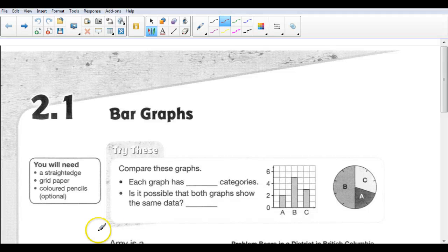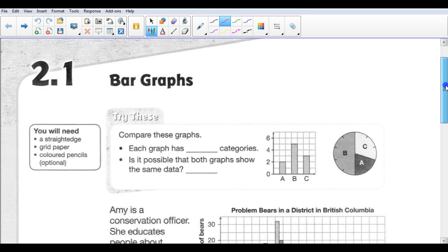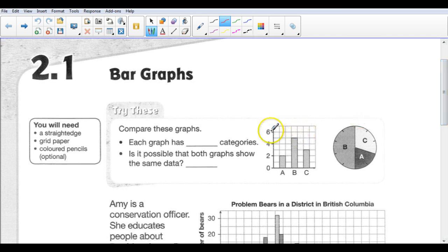Okay, this is 2.1, and we're going to be dealing with bar graphs. So what we're going to do is we're going to interpret a bar graph, and then we're going to draw a bar graph. So we know what bar graphs look like. This is a bar graph right here. Over here on the right is a circle graph.